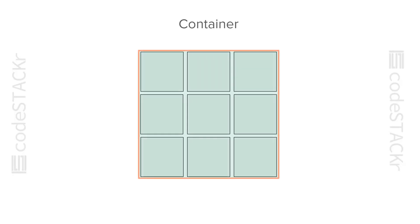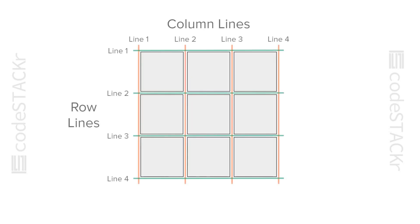With Grid, we have to have a container wrapping our grid items. There are rows and columns in Grid, but they are defined by the lines. This part is one of the more complicated to understand, so I'll take a little bit of time to explain this one. If you can wrap your head around this concept and understand it completely, then you'll be all set.